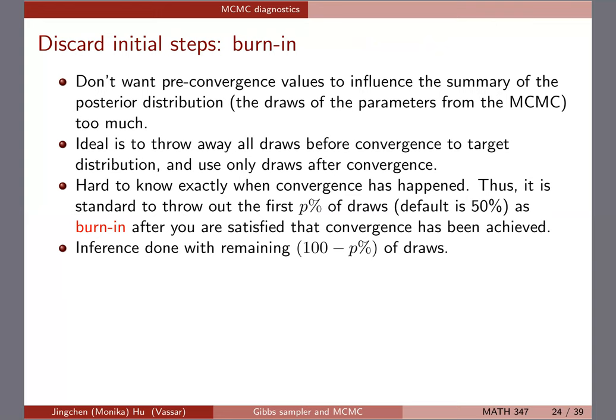One thing we talked about is discarding the initial steps — the burn-in period. When you start an MCMC chain at a particular value, that starting value may be very far from the posterior. So we discard those initial values so they won't affect the later draws. The default burn-in is 50% of draws, but you can adjust it. Inference is then made with the remaining 100 minus p percent of draws.